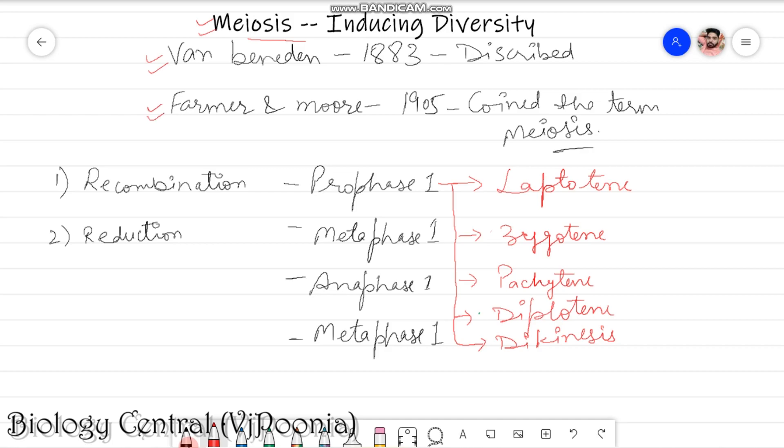If you have not seen the video about the chromosomal movement in meiosis, you can just check out on the i button. In 1883 the meiosis was described and 1905 when Farmer and Moore coined the term meiosis.